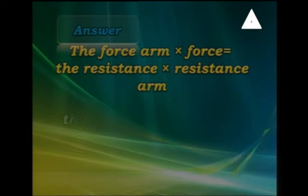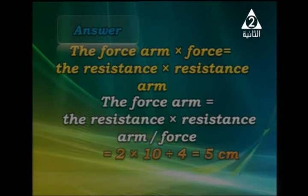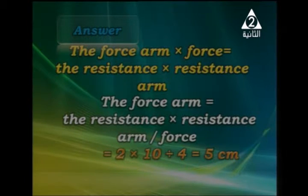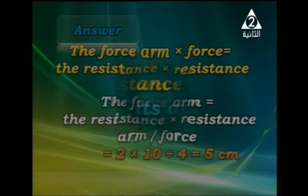Force Arm = (Resistance × Resistance Arm) ÷ Effort Force = (10 × 2) ÷ 4 = 20 ÷ 4 = 5 centimeters. So the resistance is 10 weight, the resistance arm is 2 cm, and the effort force is 4 weight, giving us a force arm of 5 centimeters.